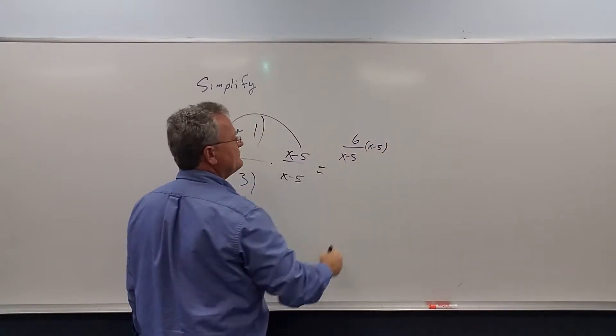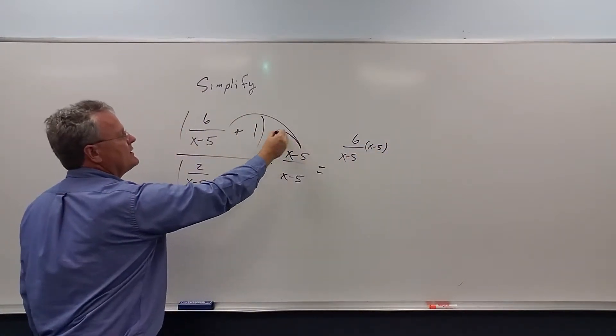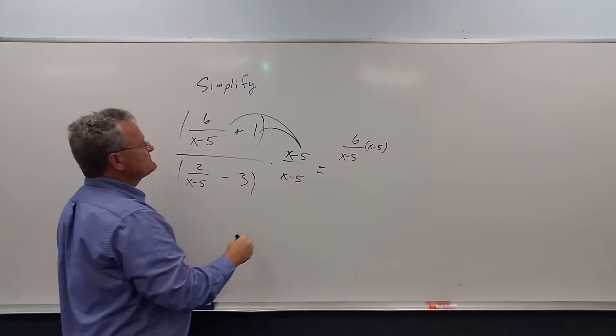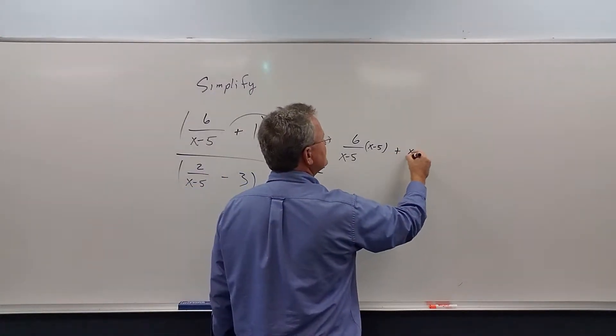Let me put parentheses around that. And then here we get 1 times x minus 5, which is just x minus 5.